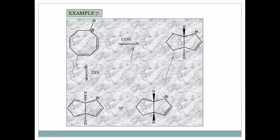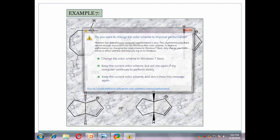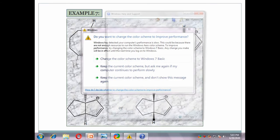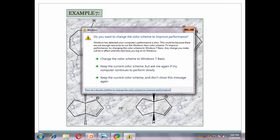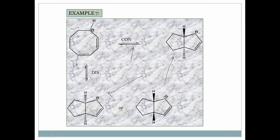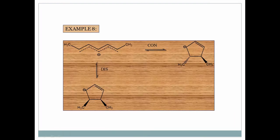Another example with a cyclopentadienyl-type system: observe both methyls — they are at opposite sides. In con-electrocyclization both methyls come to opposite sides in the product. In dis-electrocyclization, both methyls are opposite, so they come to the same side in the product.